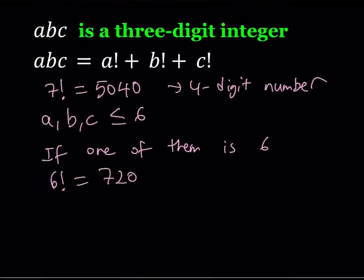So this number is going to be, since the other digits can also be non-zero, let's say A is equal to 6 and B or C is non-zero, this number is going to be at least 720, greater than or equal to 720.